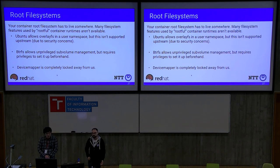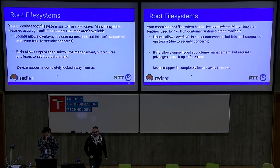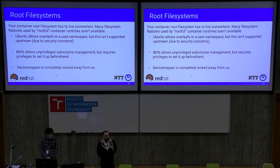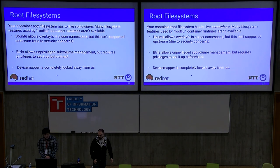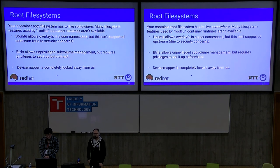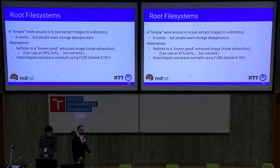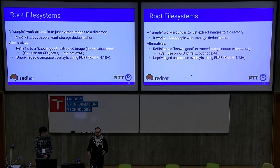Before a container can be used, the image needs to live somewhere. Most storage backends that work fine with root containers are not usable with rootless containers because an unprivileged user lacks sufficient privileges to set them up. Ubuntu has unlocked overlay for unprivileged use, but that is not supported upstream because kernel developers consider it unsafe. BTRFS allows unprivileged volume management but needs prior admin configuration, and device mapper is completely out of reach for an unprivileged user.